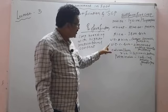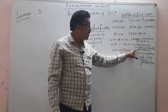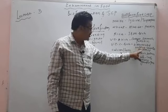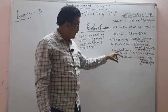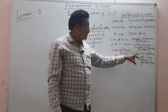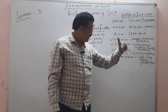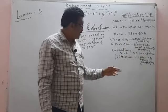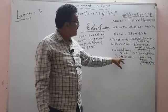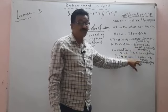Vitamin C-rich plants are bitter gourd, bathua, tomato, and mustard. Calcium and iron-rich variety, and protein-rich variety includes lab-lab, beans, and garden peas.